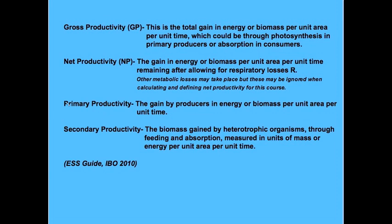Here is a list of definitions from the ESS course guide. We can see our definition of primary productivity, secondary productivity, and net and gross productivity. In each case it refers to the energy or biomass per unit area per unit time. Net productivity refers to the loss in respiration, and secondary productivity refers to heterotrophic organisms that feed on autotrophic organisms.